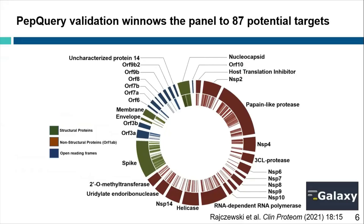After running the second workflow, we see that our initial set of 639 SARS-CoV-2 peptides is winnowed down to 87 peptides, which show high specificity for the virus. Of these, most of the peptides belong to the structural proteins, again including the spike protein, the nucleocapsid protein, and membrane proteins, which make up the viral particle itself, while replication proteins translated from the large ORF1 are largely lost.